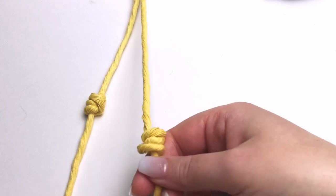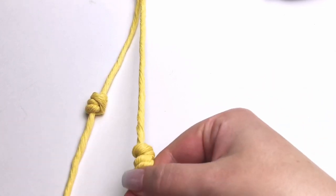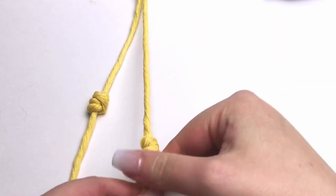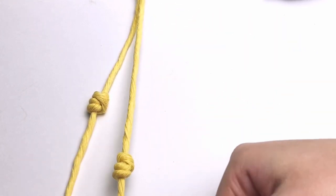Once you've wrapped it three times, all you have to do is pull your knot upwards and voila, that is how you tie a simple barrel knot.